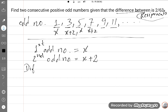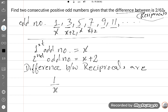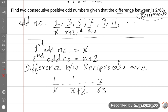The difference between reciprocals is 2 upon 63. So the difference between reciprocals is 1 upon X, which is the reciprocal of the first odd number, minus 1 upon X plus 2, the reciprocal of the second odd number, is equal to 2 upon 63. So this is the equation. Now we will solve it further.